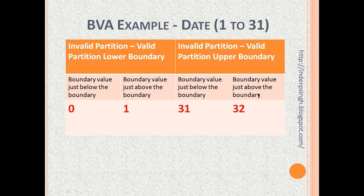Let us go back to the date example. The valid partition is any date between 1 and 31. There is a lower boundary between 0 and 1. The value 0 is just below the boundary — the system should reject it. The value 1 is just above the boundary — the system should accept it. There is also an upper boundary: 31 is just below the upper boundary and should be accepted, while 32 is just above the boundary and should be rejected by the system.